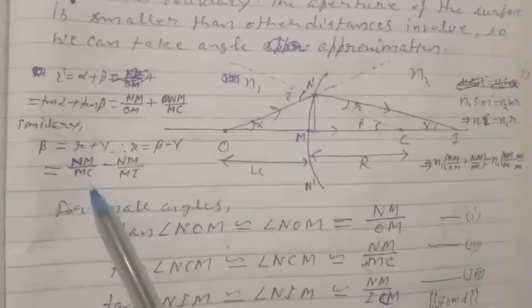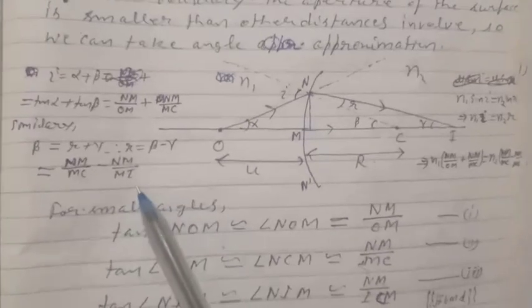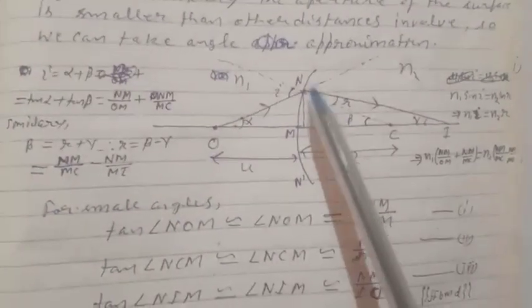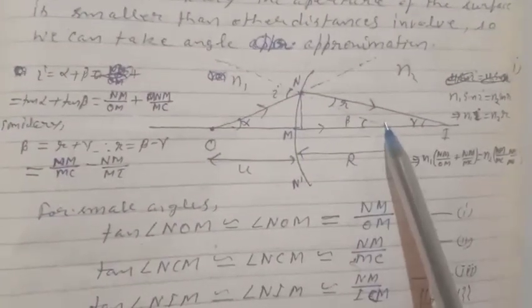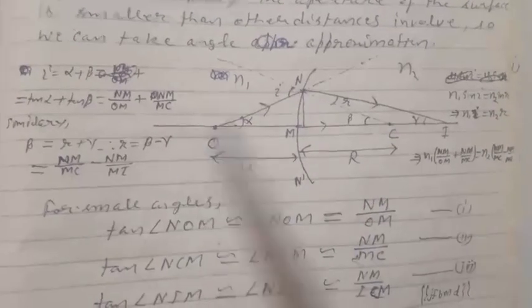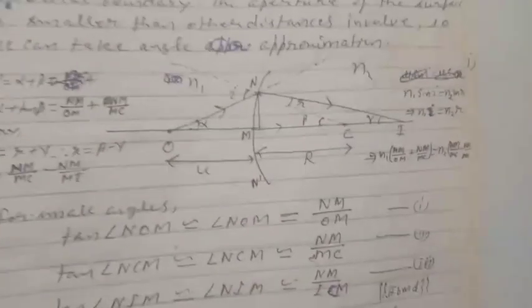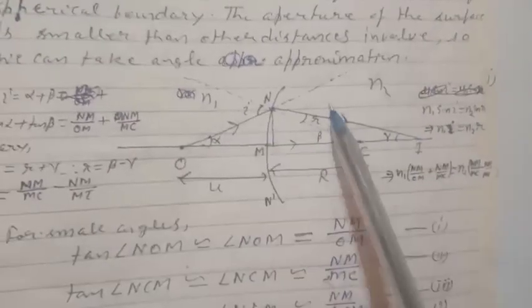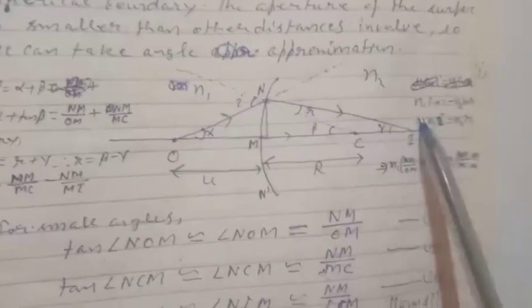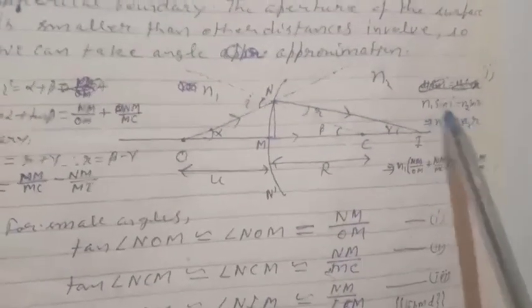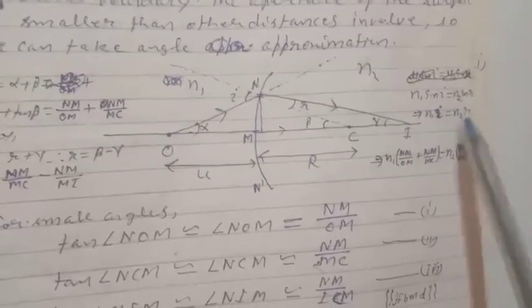Taking the approximation method, r can also be written as NM/MC minus NM/MI. We also have a relation between the angles from Snell's law: n1 sin i equals n2 sin r. Because we are using the small-angle approximation, this becomes n1·i equals n2·r.